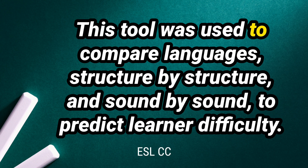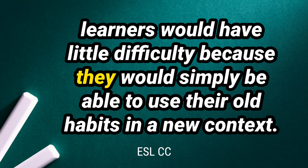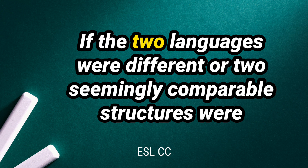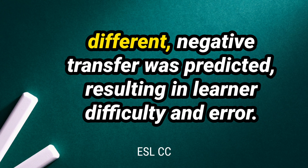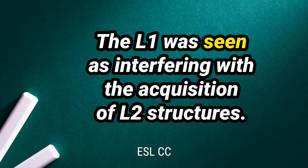Contrastive analysis was used to compare languages structure by structure and sound by sound, to predict learner difficulty. Wherever languages were similar, it was predicted that there would be positive transfer — learners would have little difficulty because they would simply be able to use their old habits in a new context. If the two languages were different, negative transfer was predicted, resulting in learner difficulty and error. This type of transfer is often referred to as interference — the L1 was seen as interfering with the acquisition of L2 structures.